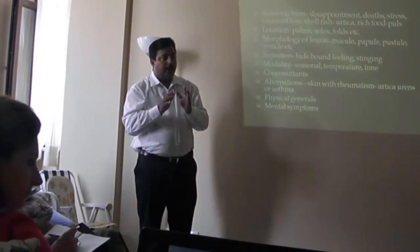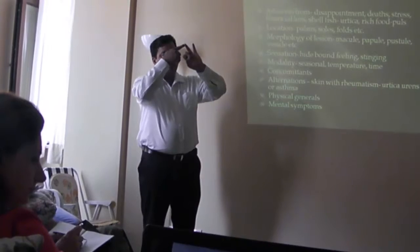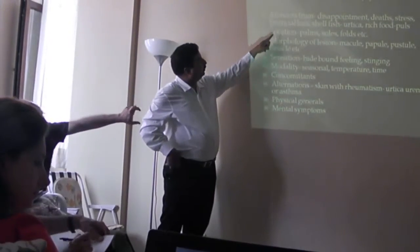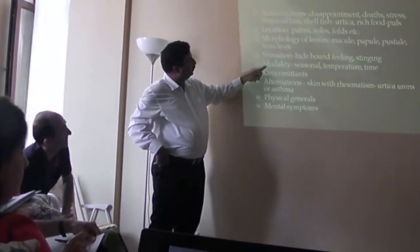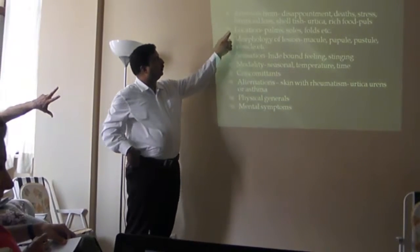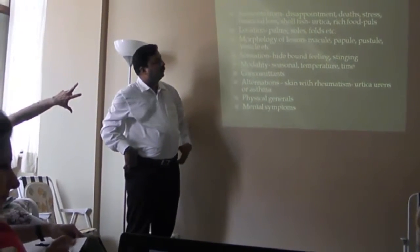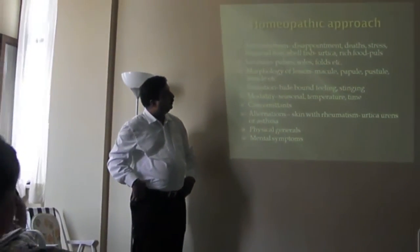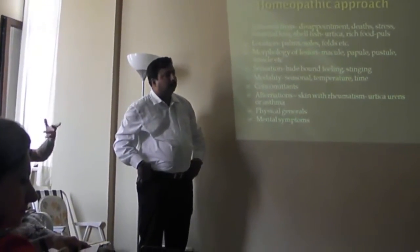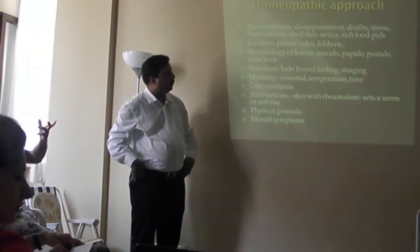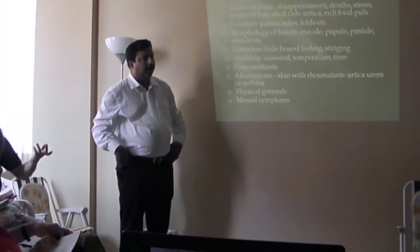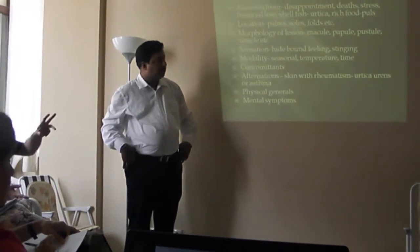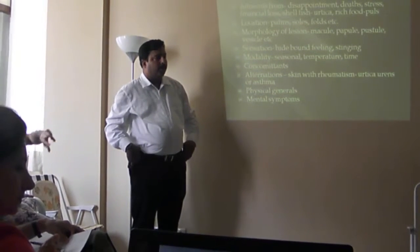The commonest order is ailments from location, sensation, modality and concomitants. This is the most common sequence - where and when it started, the location, the lesion morphology, and sensation. Modalities, and concomitants - the other symptoms that occur together.